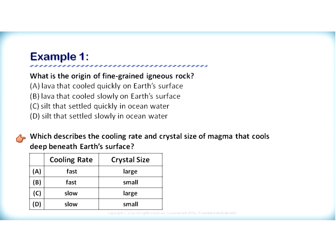The second question of example one reads: which describes the cooling rate and crystal size of magma that cools deep beneath Earth's surface? If we're looking at magma cooling beneath the Earth's surface, it tends to cool much slower. And because it cools much slower, the crystals have more time to form and grow, generally resulting in large crystals. So from the choices, it is deep within the Earth where magma cools slowly, and the resulting crystals would be large. The answer is C: slow cooling rate and large crystal size.